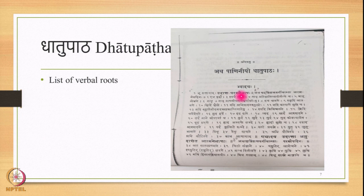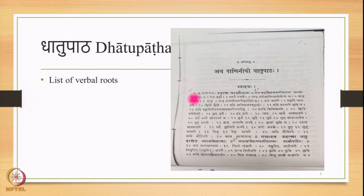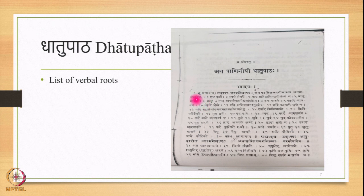These 48 roots are also known as Bhwadayaha, because at the beginning of these 48 roots appears the verbal root Bhu. The entry reads: Bhu Satyayam — number one, followed by the verbal root Bhu, followed by its meaning Satta. Satta means existence. The verbal root Bhu generally denotes the meaning 'to exist'. This is the meaning of this entry.